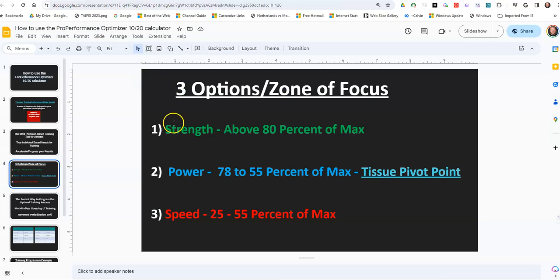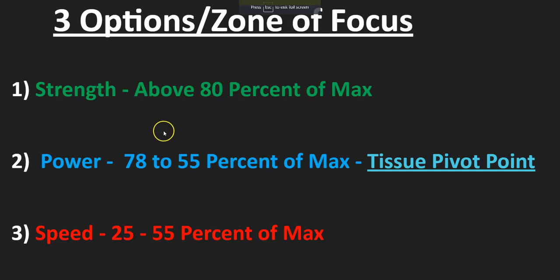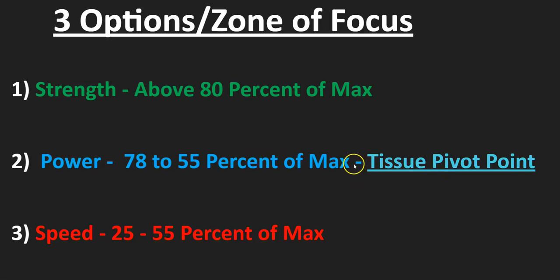If you get a strength reading, it means you're above 80% of your max. If you get a power reading, you're between 55% to 78% of your max. One thing I want to make people aware of is the tissue PowerPoint article I wrote — there's a point in the power zone where you focus more on muscle, and another point where you focus more on tendons. There's a loading point, and that's what this article is about.